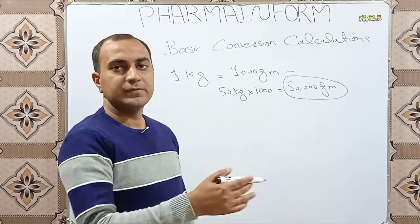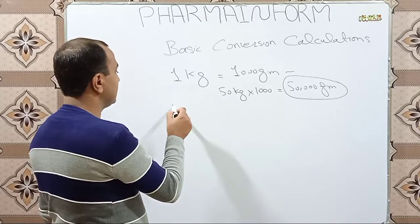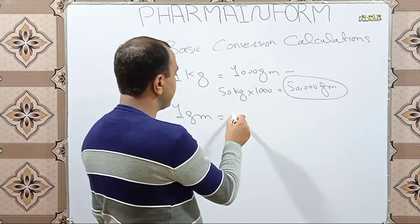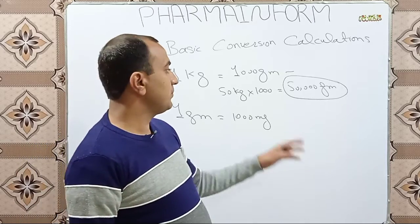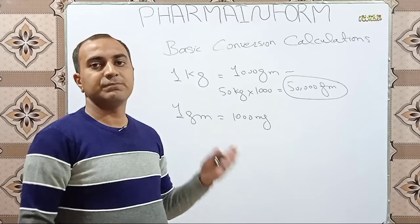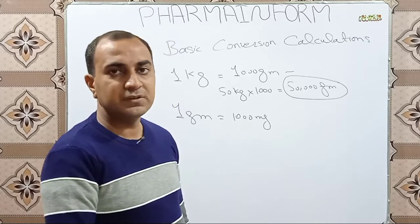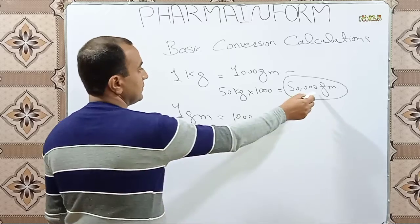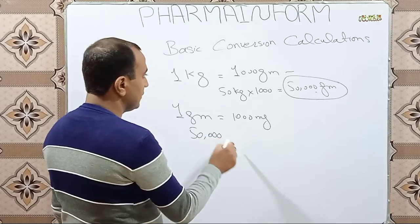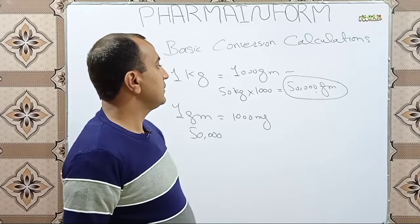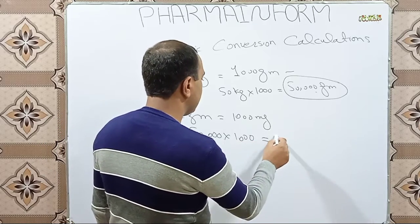The next question is how we convert grams into milligrams. In the same way, one gram is equal to 1000 milligrams. So if you want to convert any quantity from grams into milligrams, simply multiply the quantity given in grams by 1000 to get the answer in milligrams. For example, to convert 50,000 grams into milligrams, simply multiply it by 1000.